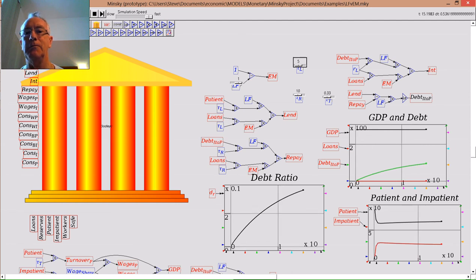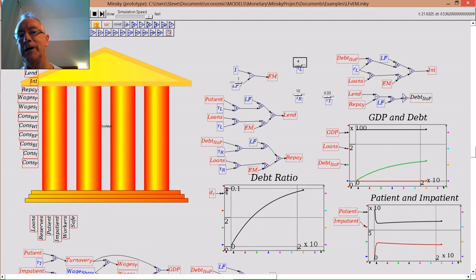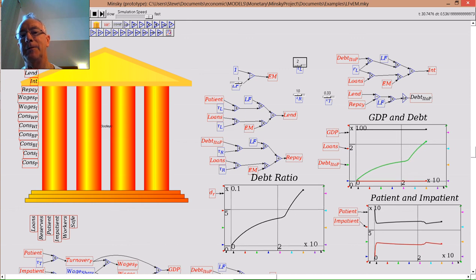If I make the rate of lending faster by the patient agent, so taking less years to lend the money - I've got from 4 to 3 - notice the debt ratio goes skyrocketing, but nothing happens to GDP.